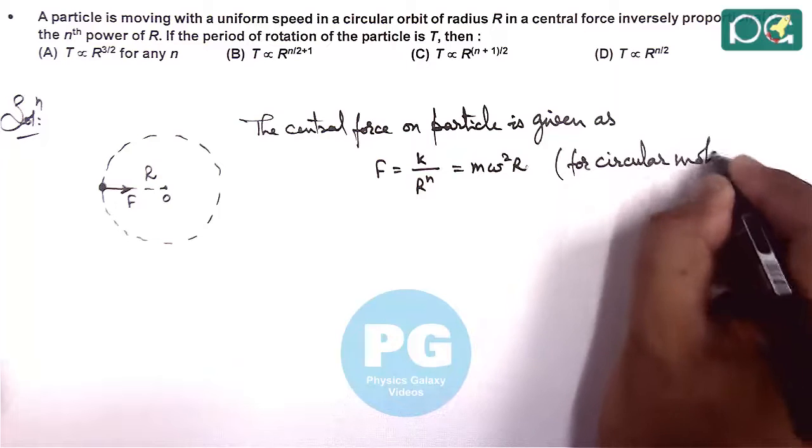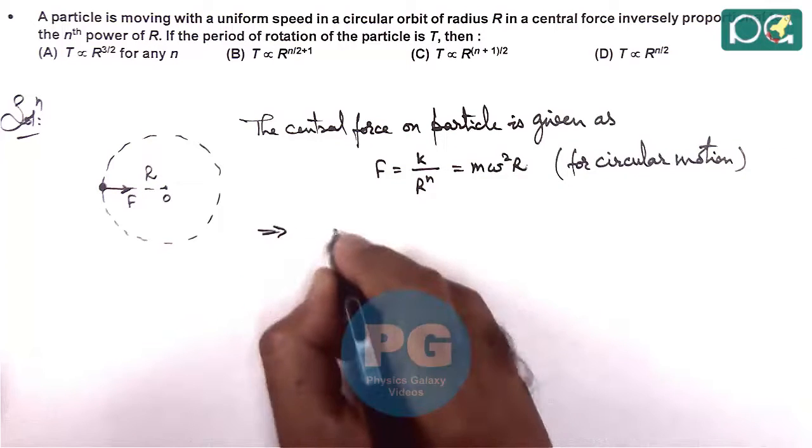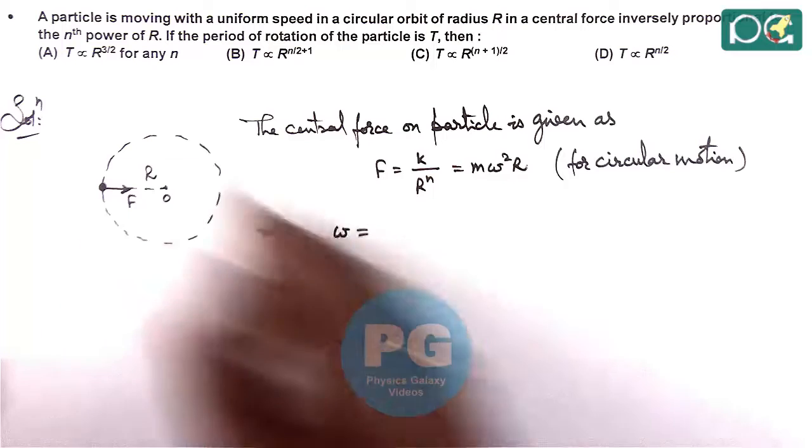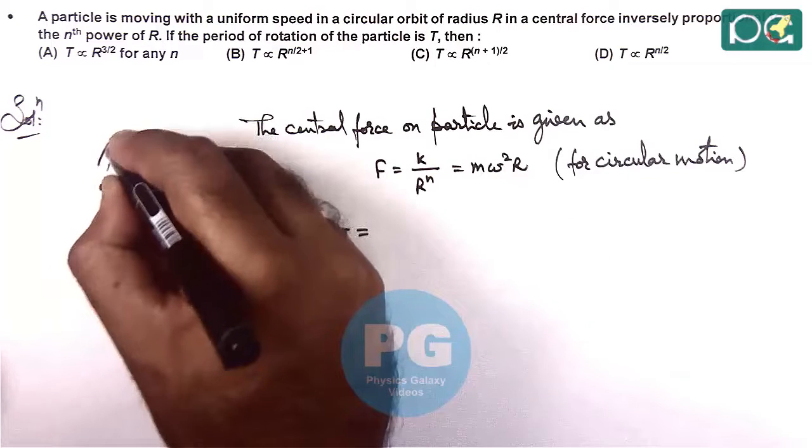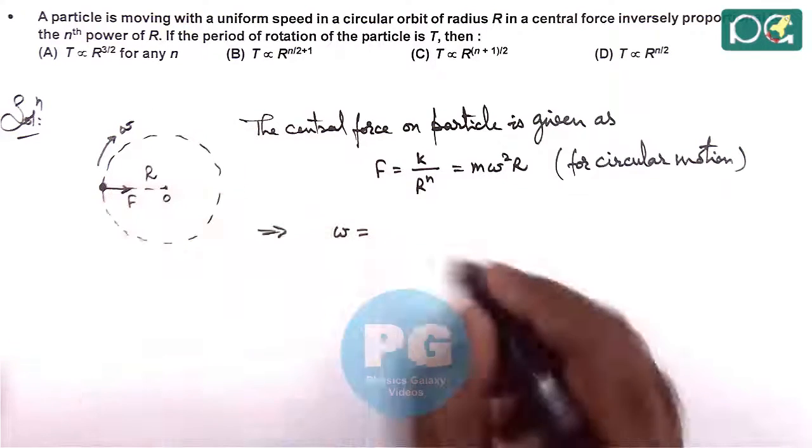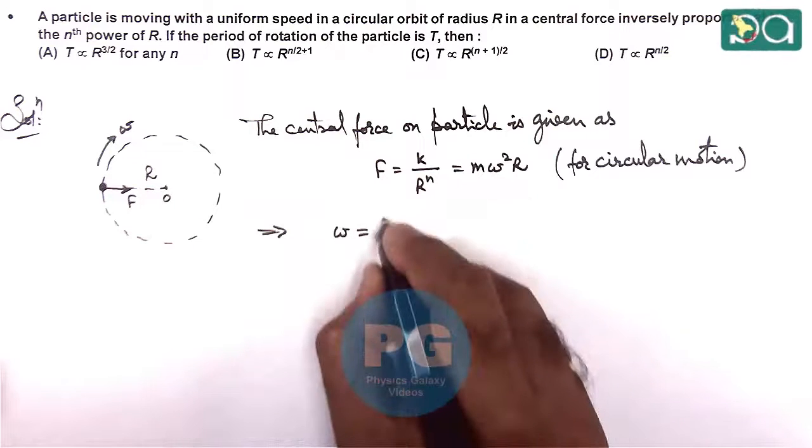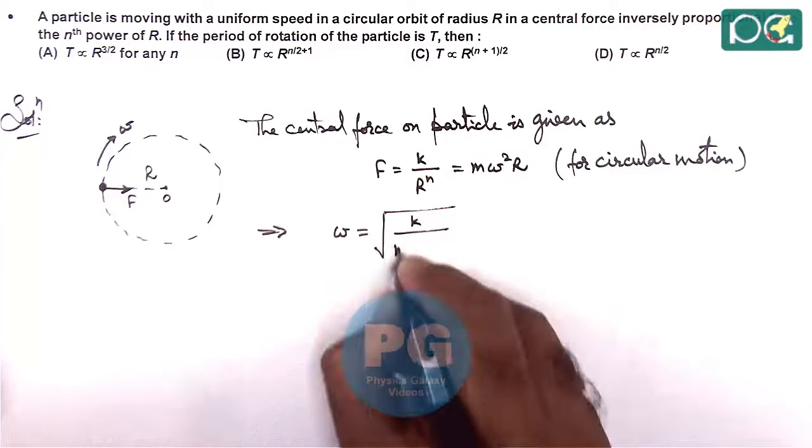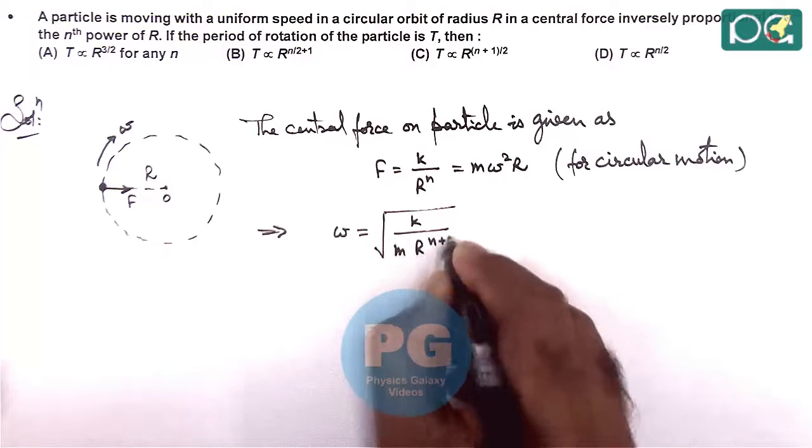And here using this relation we can find out the angular speed of circular motion with which it is moving. If it is revolving at angular speed omega, that can be given as root of k by m r to power n plus 1.